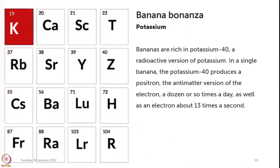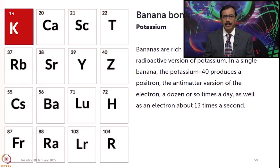Let us look into some interesting aspects about potassium. Bananas are very rich in potassium-40, a radioactive version of potassium. In a single banana, potassium-40 produces a positron — the antimatter version of the electron — a dozen or so times a day, as well as an electron about 13 times a second.